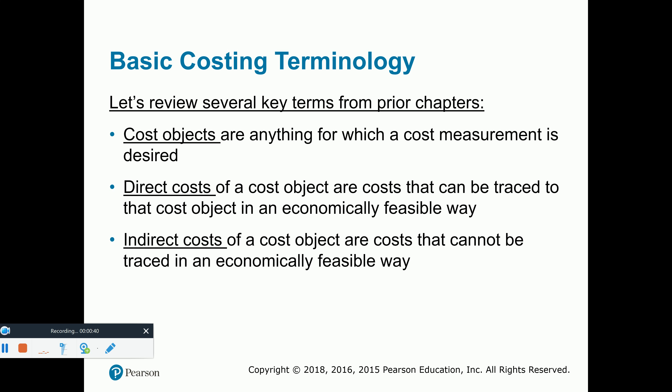The main idea with job costing is each job or each customer order is unique. They are not the same exact items that we are producing for every single customer. A good example would be if you are a home builder building individual homes for individual homeowners. The model might be different, the kitchen cabinets might be different, the flooring might be different. Each home site is a separate job and the job costs would flow appropriately.